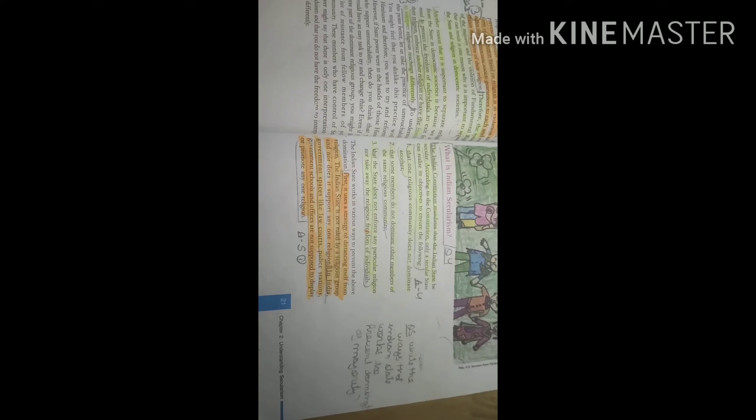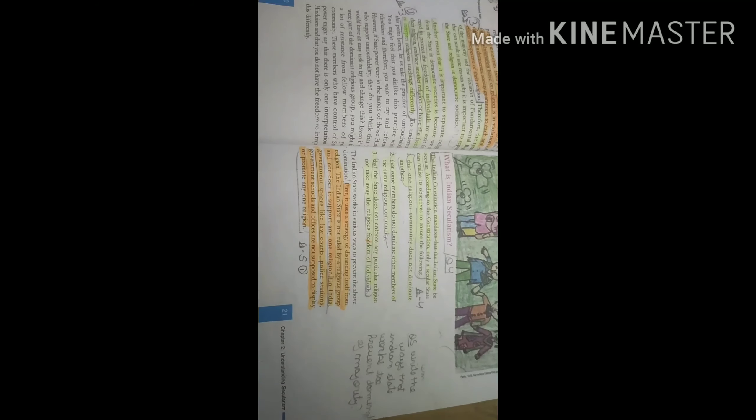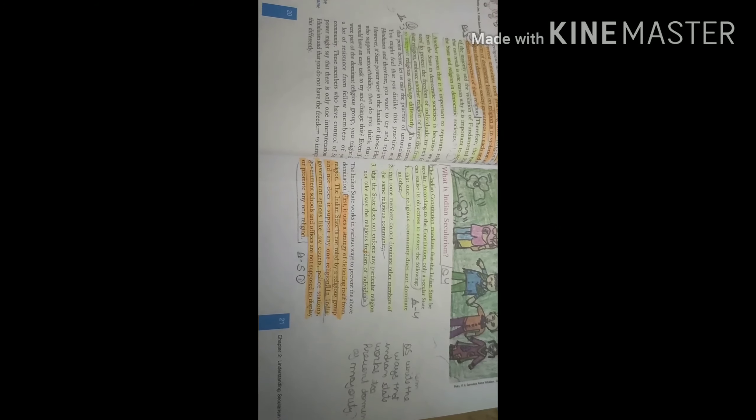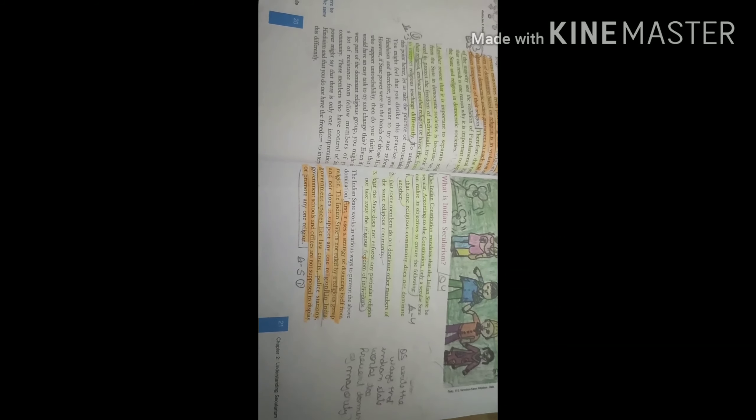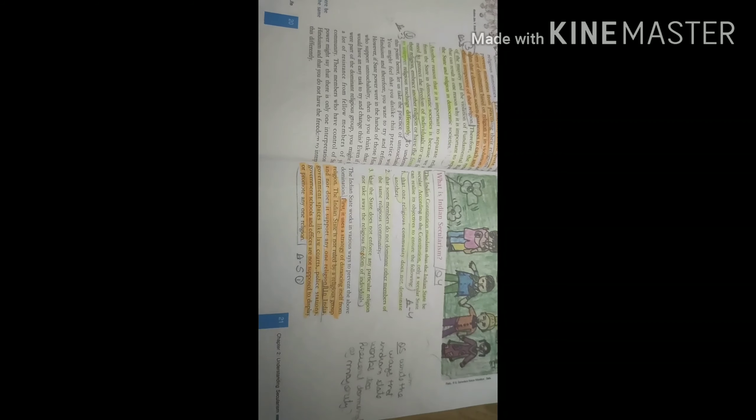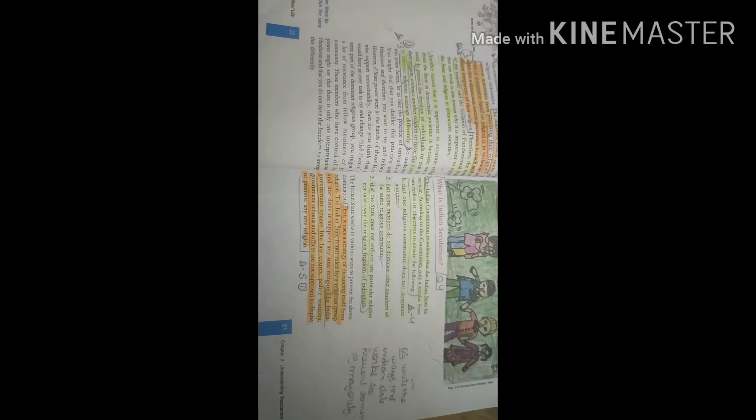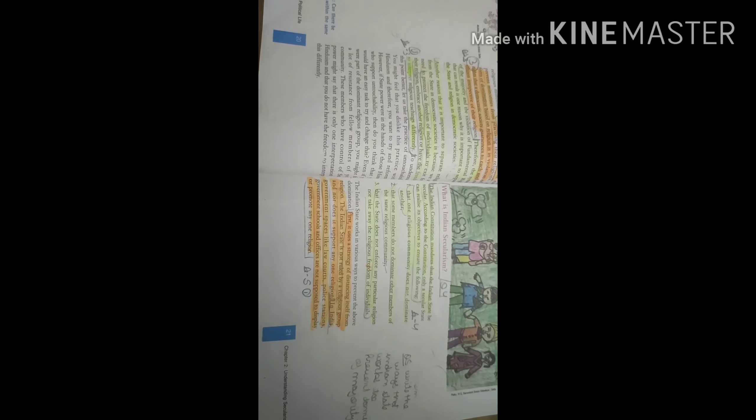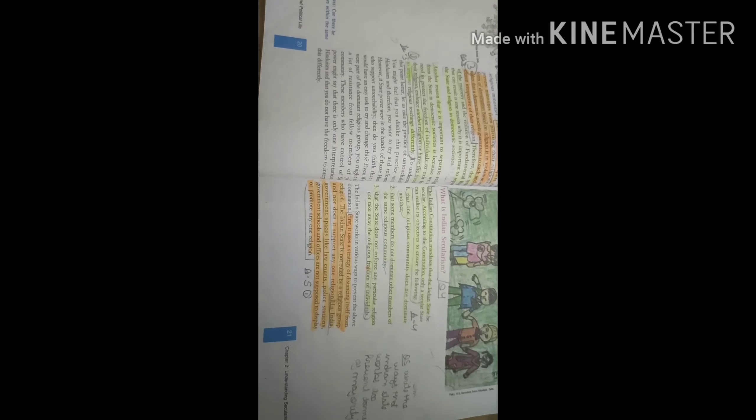Now, what is Indian Secularism? As per the constitution, a secular state has got certain goals that it guarantees. The first one, to check dominance of one religious community over another religious community, that one religious community does not dominate another one.